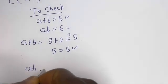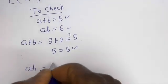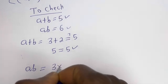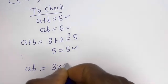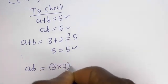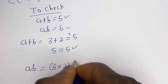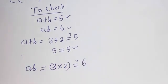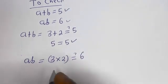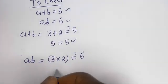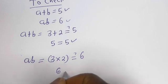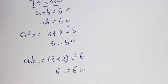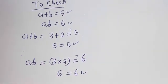Now checking a times b: 3 multiplied by 2 must equal 6. Of course, 3 times 2 is 6, which equals 6 — which is true. I hope you enjoyed the video.